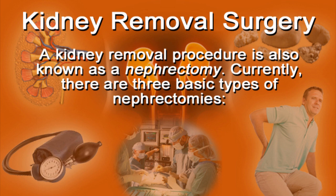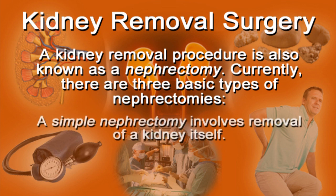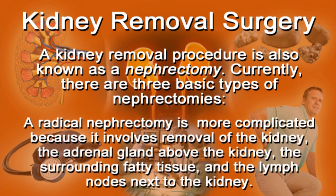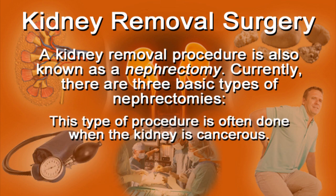A kidney removal procedure is also known as a nephrectomy. Currently there are three basic types of nephrectomies. A simple nephrectomy only includes removal of the kidney itself. A radical nephrectomy is more complicated because it involves removal of the kidney, the adrenal gland above the kidney, the surrounding fatty tissue, and the lymph nodes next to the kidney. This type of procedure is often done when the kidney is cancerous.